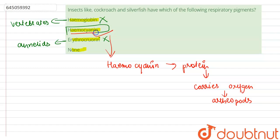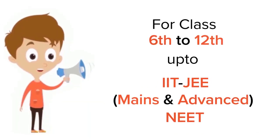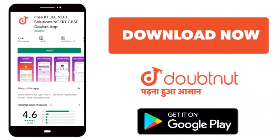The correct option for this question is hemocyanin. Thank you. For class 6 to 12, IIT-JEE and NEET level, trusted by more than 5 crore students, download Doubtnet app today.